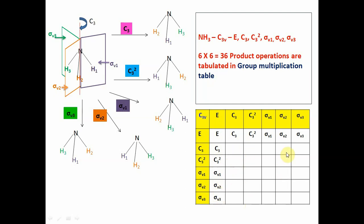To fill the remaining grids of the multiplication table, we perform these operations on the ammonia molecule. The ammonia molecule has a pyramidal shape, so the C3 axis passes through the nitrogen atom at the center. When we rotate this molecule by 120 degrees, hydrogen H1 goes to a new position, H2 comes here, and H3 comes here — giving a new orientation. For C3² operation, through the same axis, we rotate the molecule by 240 degrees, giving another orientation where H1, H2, and H3 are repositioned accordingly.